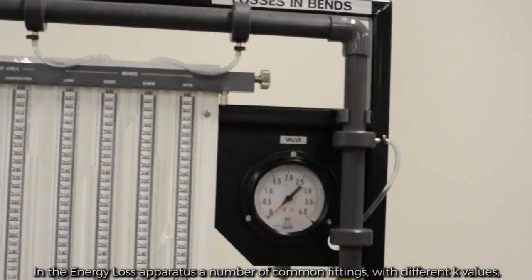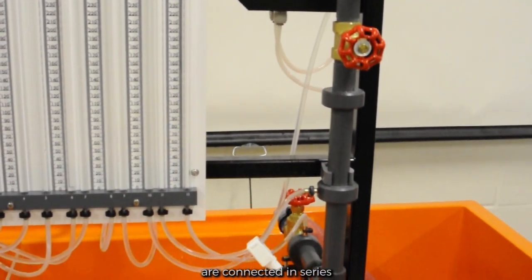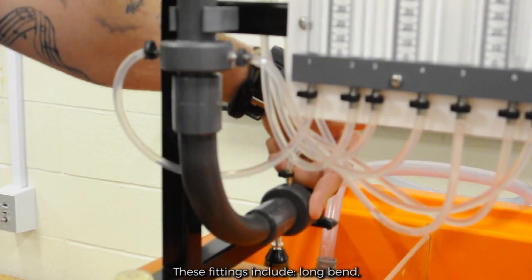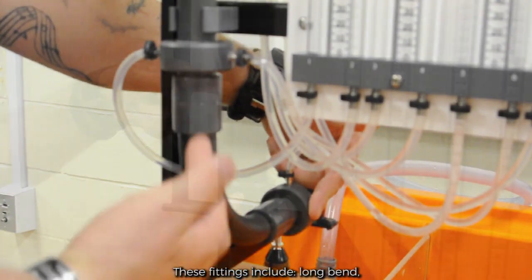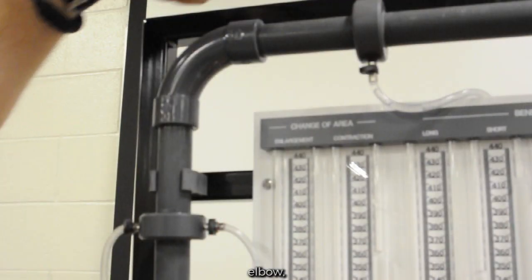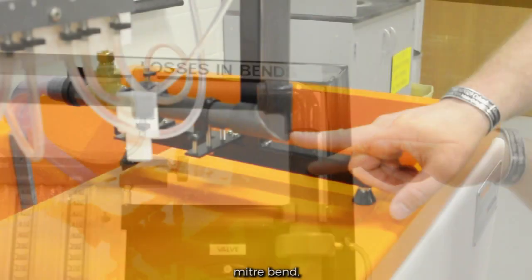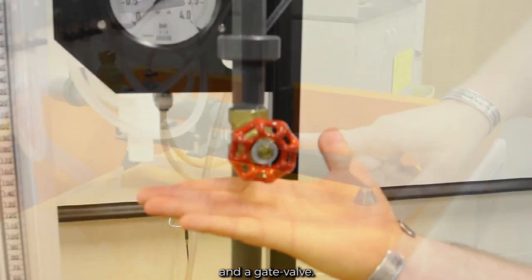In the energy loss apparatus, a number of common fittings with different k-values are connected in series. These fittings include long bend, enlargement, contraction, elbow, short bend, miter bend, and a gate valve.